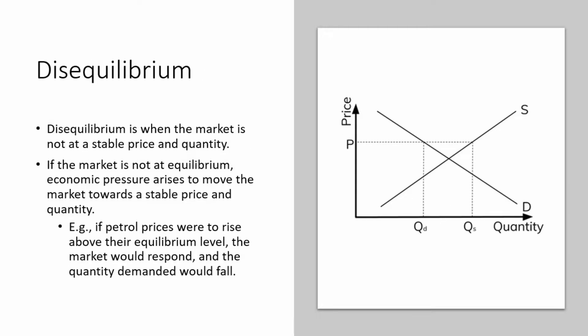Disequilibrium. Disequilibrium is when the market is not at a stable price and quantity. If the market is not at equilibrium, economic pressure arises to move the market towards a stable price and quantity. For example, if petrol prices were to rise above their equilibrium level, the market would respond, and the quantity demanded would fall.